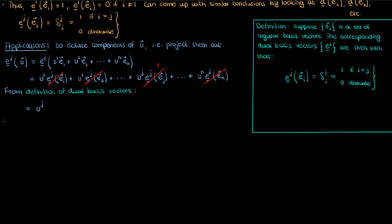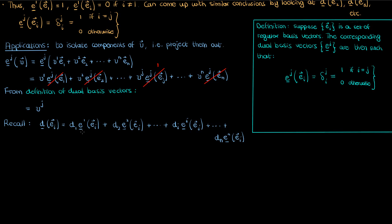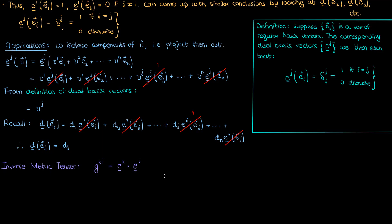Contravariant components have a superscript and covariant components have a subscript. This projection mirrors what regular basis vectors can do: they isolate or project out covariant components, such as those from the dual vector d. So if I apply my dual vector d to the ith basis vector e sub i, everything on the right cancels except the term where e super i operates on e sub i, which is 1, leaving just d sub i. Another application of dual basis vectors is the metric tensor — specifically the inverse metric tensor. You can define the inverse metric tensor component g super ki as the inner product of dual basis vectors e super k and e super i, in contrast to the regular metric tensor g sub ij, which is the inner product of e sub i and e sub j.